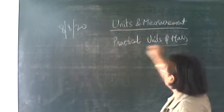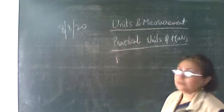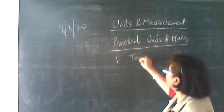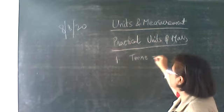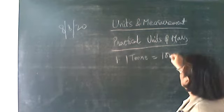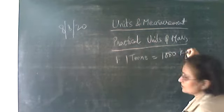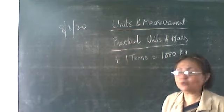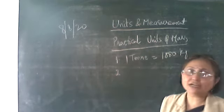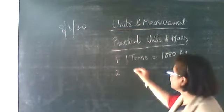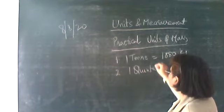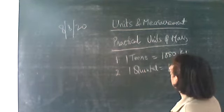Some bigger units of mass are the ton, also called the metric ton, where one ton is equal to 1000 kg. Another bigger unit for mass is the quintal, where one quintal is equal to 100 kg.